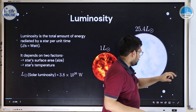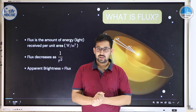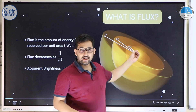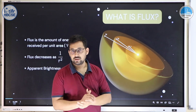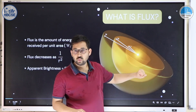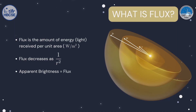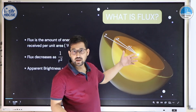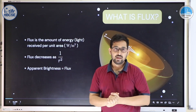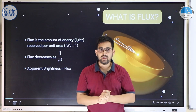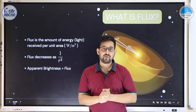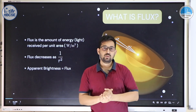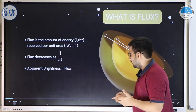Another important quantity is flux. A star radiates a certain energy per unit time — its luminosity — and that energy spreads radially through space. For an observer at distance r, the energy received per unit area per unit time is governed by the spherical surface area at distance r. Since that surface area increases as r², and energy is conserved, flux varies as 1/r². The apparent brightness of a star is essentially the flux received from that star.